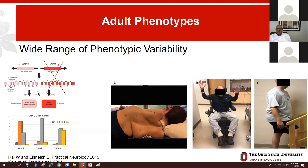Ambulatory adults are usually previously classified as SMA type 3 or 4. They have weakness that predominantly affects proximal muscles, making it difficult to get up from the floor or go up steps. Sometimes the upper extremity is involved, with difficulty reaching above shoulder level. They usually do not have any swallowing or breathing muscle involvement. In between is a non-ambulatory phenotype with more severe lower extremity weakness but retention of distal arm and hand strength.